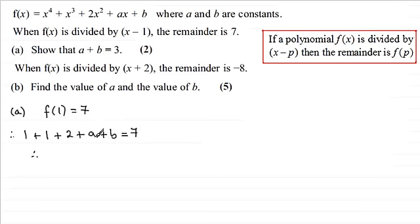So therefore, you're left with a plus b equals 7 take away 4, which is 3. And that's what we had to show.